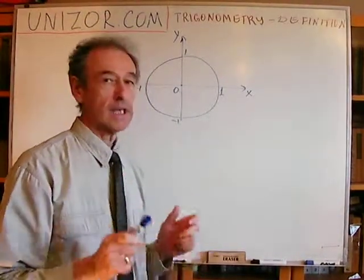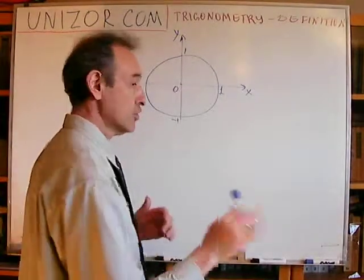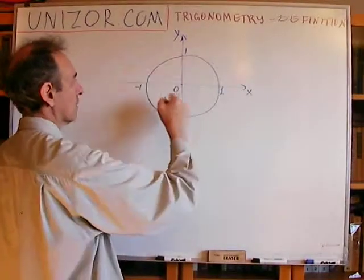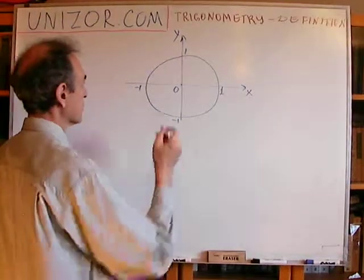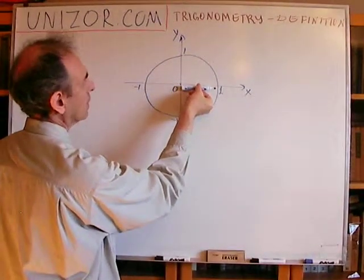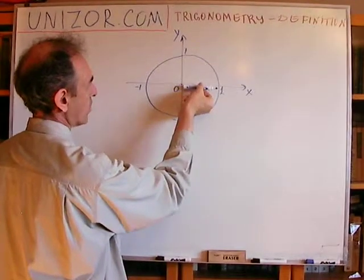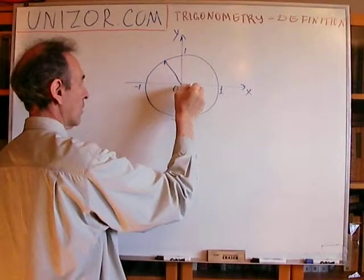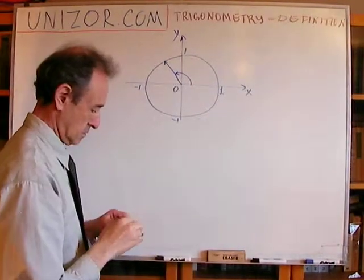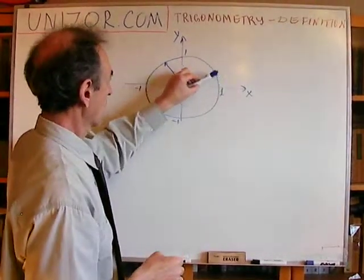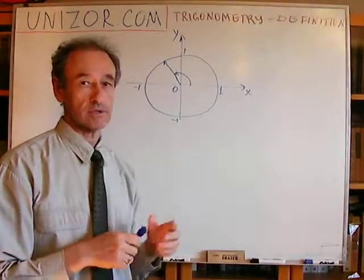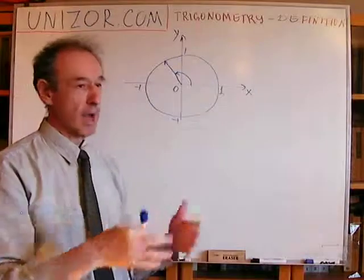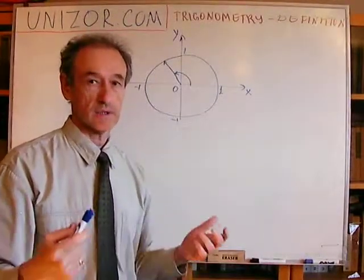Next, for any angle — I mean any angle: acute, obtuse, 90 degrees, 270 degrees, whatever — we can find a point on this circle which is the result of movement of this particular ray, coinciding with the x-axis, to whatever angle we are talking about. Any angle can be constructed this way by moving this particular ray counterclockwise by the amount which signifies the value of our angle.